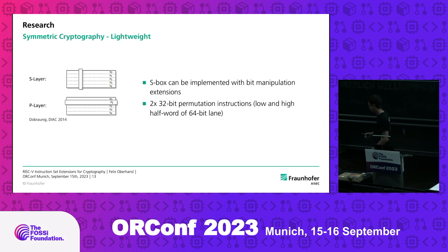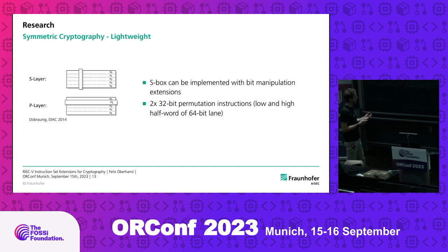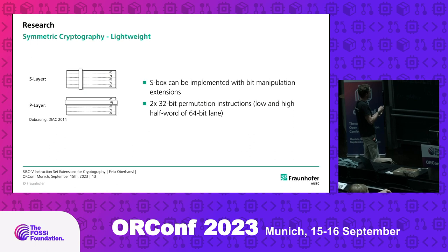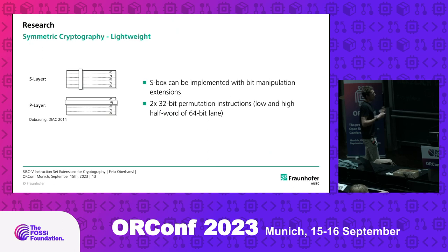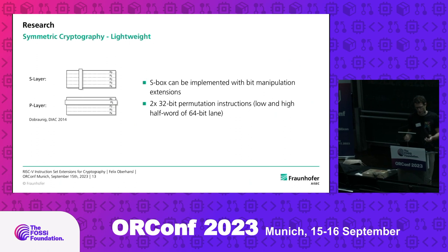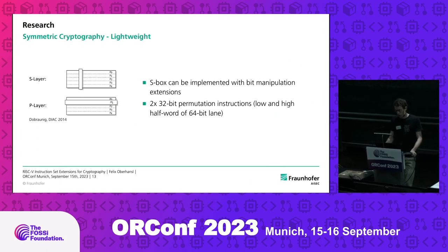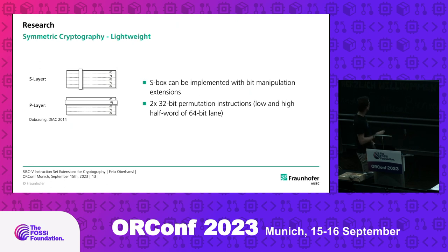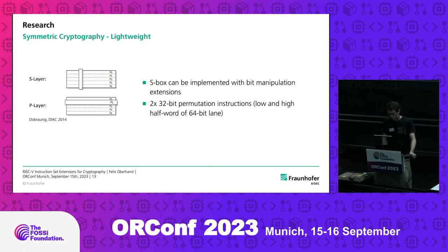I want to show an interesting aspect: how the design of cryptographic algorithms impacts the design of hardware. With Ascon, we only have one substitution layer where we substitute five bits, and one permutation layer where we permute a 64-bit lane. You might notice there's no round key as there is for AES. That's because Ascon is a so-called sponge function which always has the same operations, but absorbs first a key, then plaintext or ciphertext to encrypt/decrypt. The authors discovered that the S-box can be implemented quite nicely with the bit manipulation extensions we already have. So the only thing left to do is provide decent acceleration for the permutation layer, which they did with two 32-bit permutation instructions for the low and high half-word, at least for 32-bit architectures.